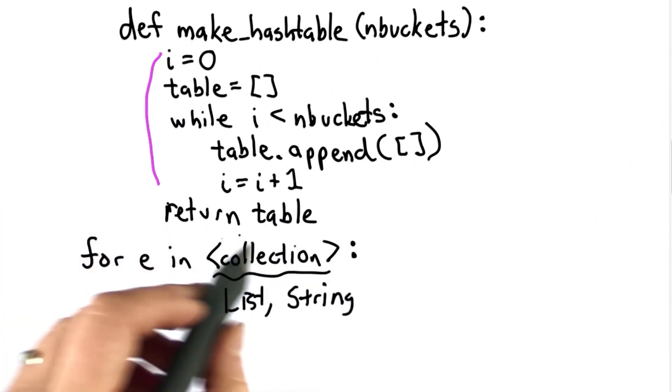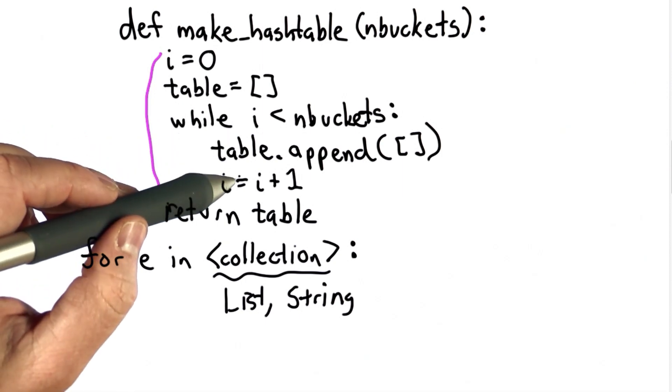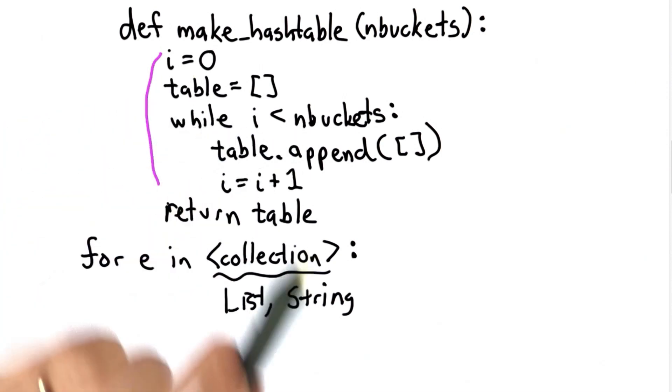To have a for loop, we need some set of objects that we're looping through. In this case, what we want to do is loop through the numbers from 0 to n buckets minus 1. So we want to create a list that contains those values.